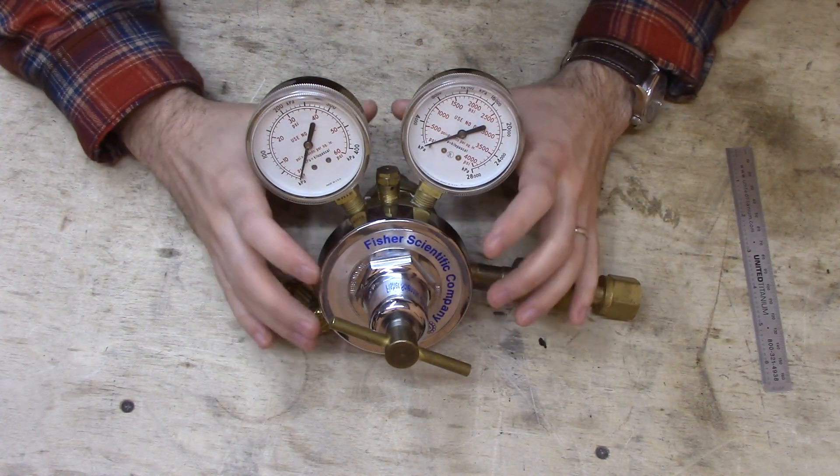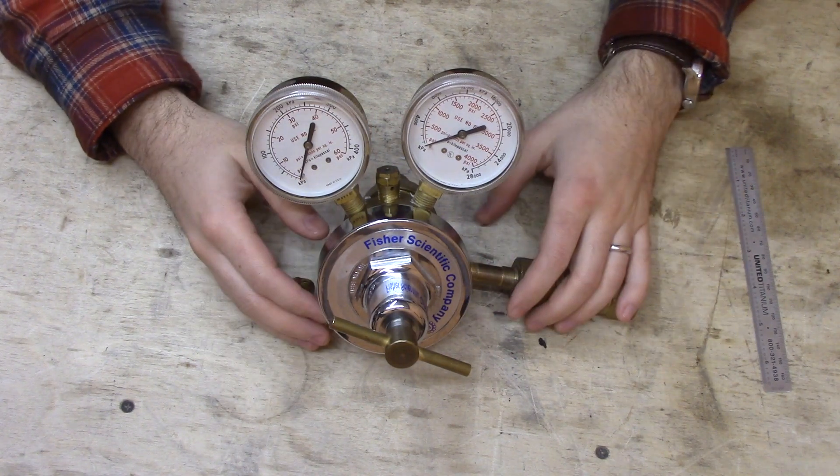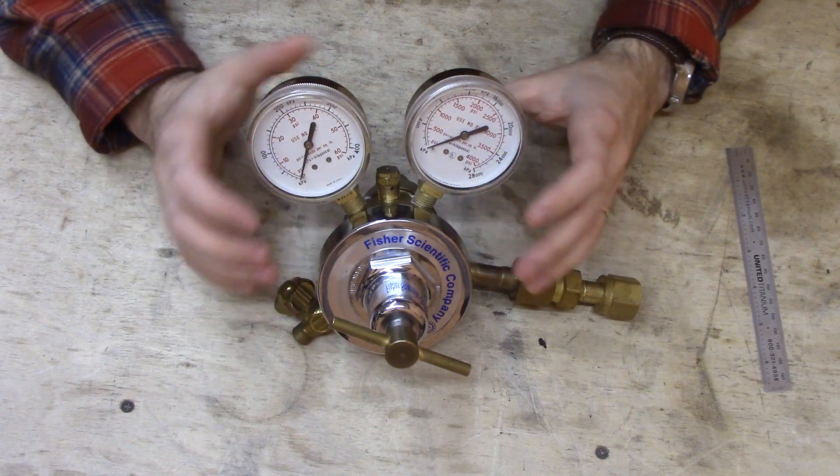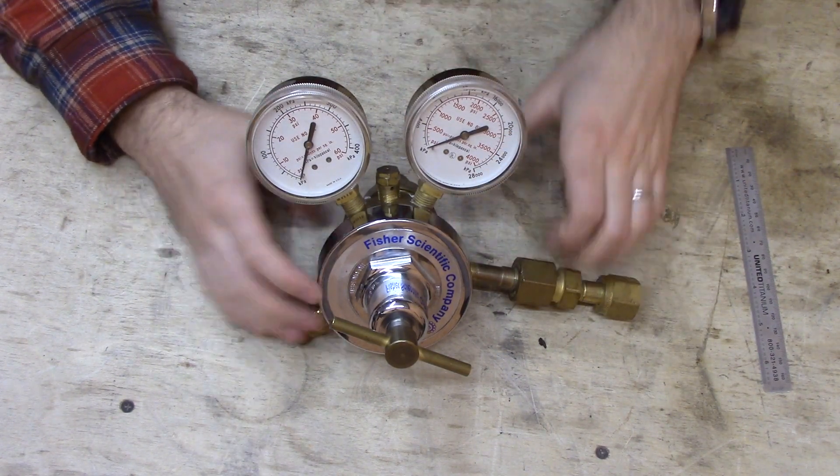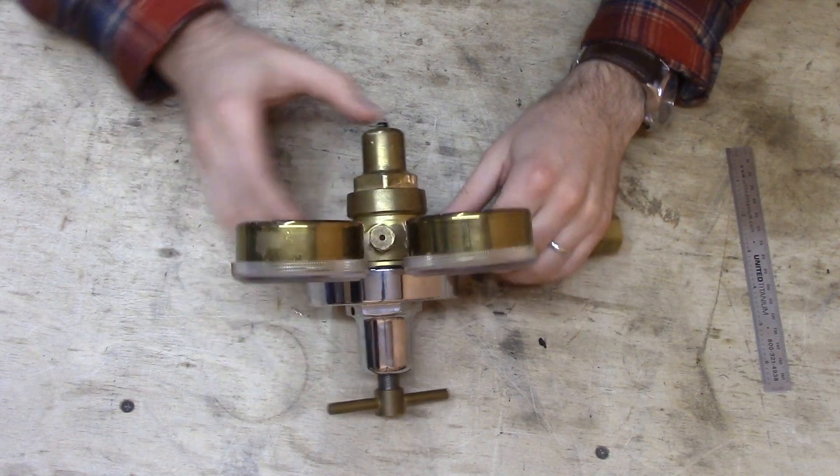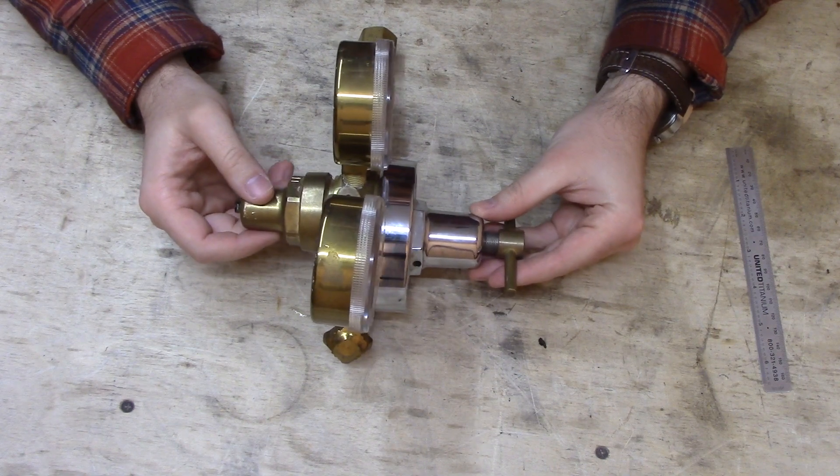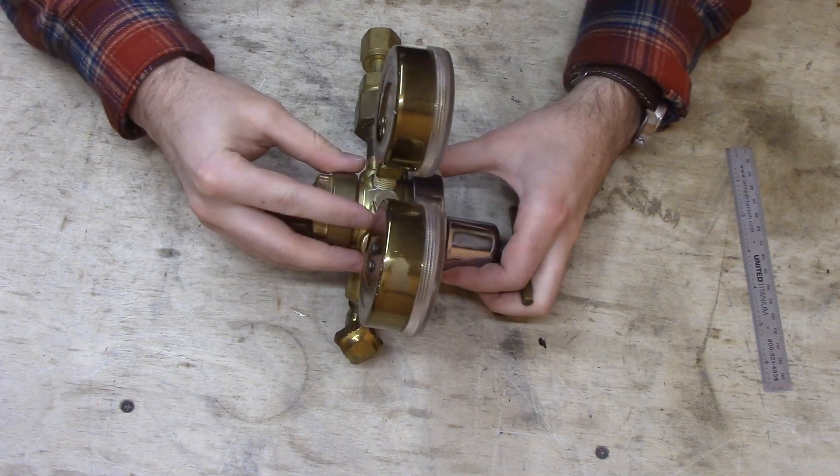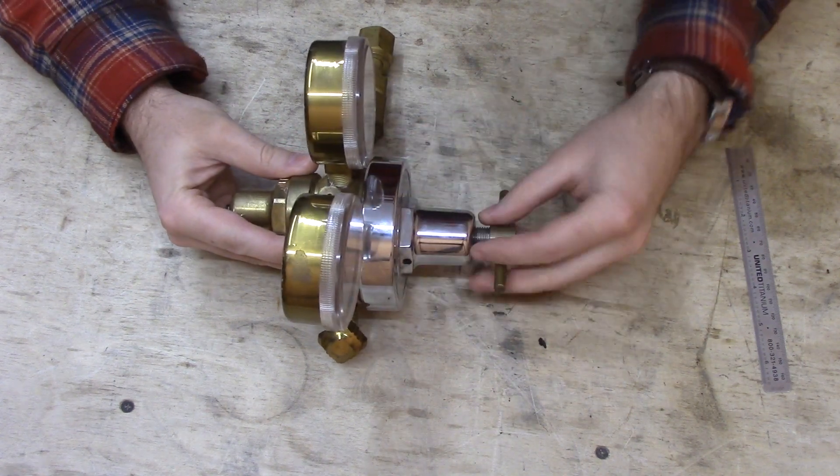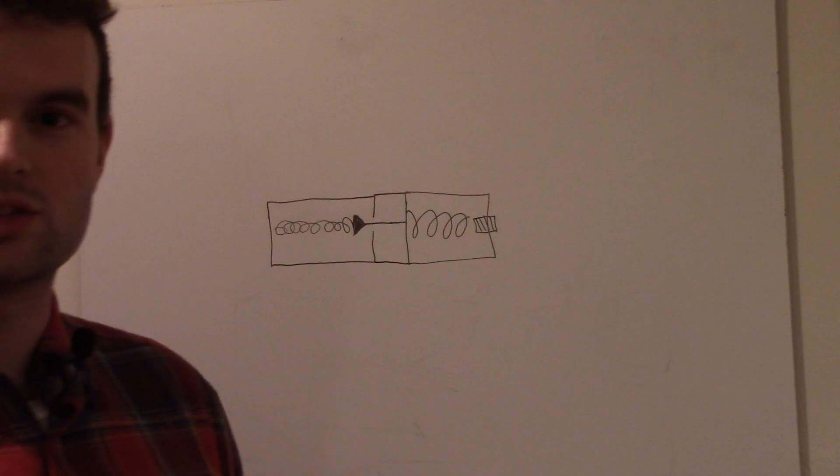And I've already taken this apart. It was kind of hard to get apart—I didn't know the right way to do it and I kind of bent it up a little bit, so it's kind of unfortunate. It's probably not really good anymore. But everything was really tight the way it was put together, and as I was taking it apart, I realized this is actually what's called a two-stage regulator.